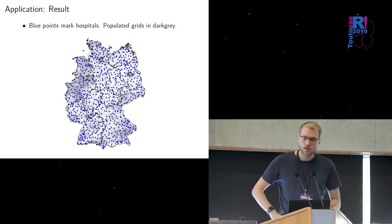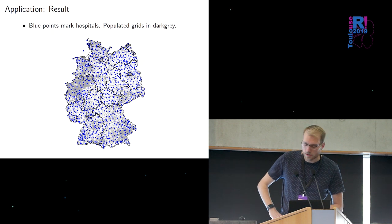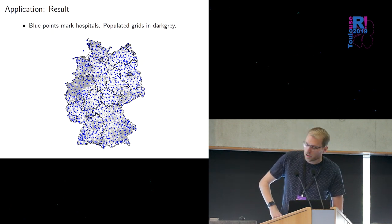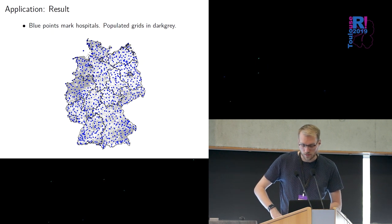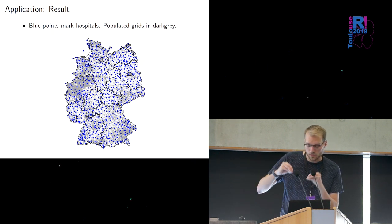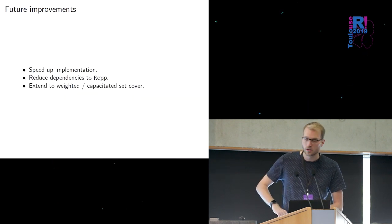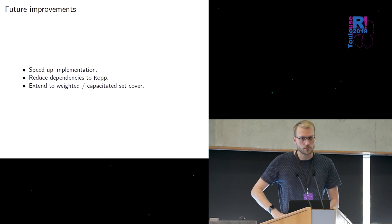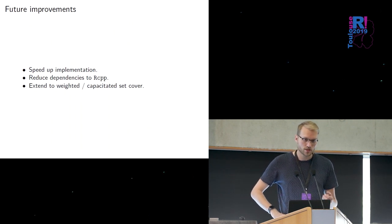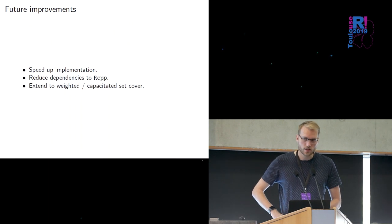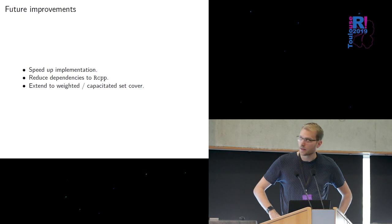This would be the output the blue points they mark the hospitals and yeah they are nicely distributed in Germany and sometimes not the way you might expect for example if you look at Berlin they don't put the sets in the center rather at the border. And yeah some extensions for the future we actually can speed it up a bit it currently needs a lot of memory I think also we can get rid of all dependencies except Rcpp and there are also some other variants of the problems which we can extend it so thank you.